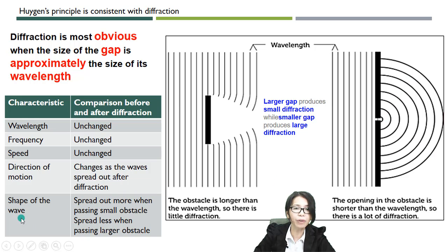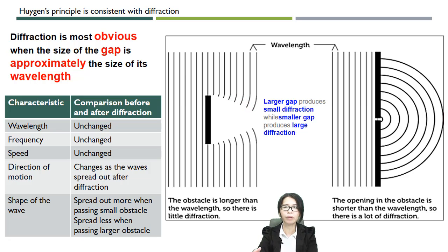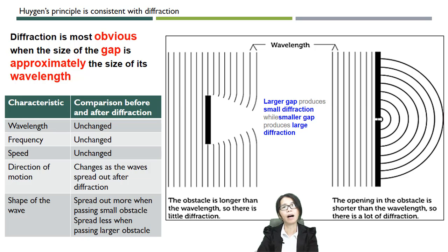The shape of the wave will spread out more when passing through small obstacles, and spread out less when passing through large obstacles. For small obstacles, the spreading is large and obvious. For large obstacles, the spreading is not that obvious. This is how we use Huygens' Principle to explain what happens during the diffraction of light.